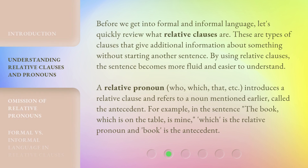Before we get into formal and informal language, let's quickly review what relative clauses are. These are types of clauses that give additional information about something without starting another sentence. By using relative clauses, the sentence becomes more fluid and easier to understand. A relative pronoun — who, which, that, etc. — introduces a relative clause and refers to a noun mentioned earlier, called the antecedent.